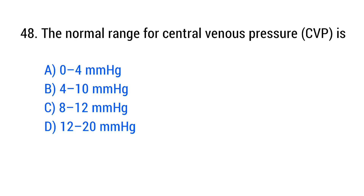Question No. 48. The normal range for central venous pressure is? The right answer is Option B: 4 to 10 mmHg.